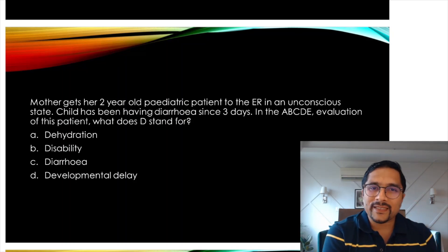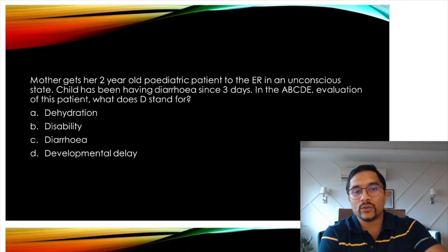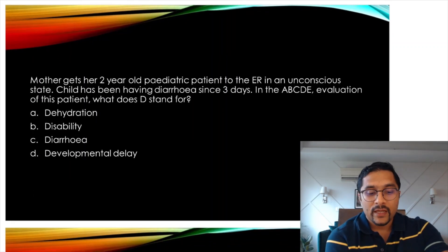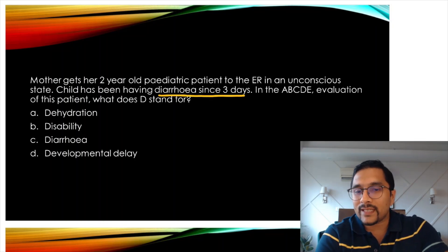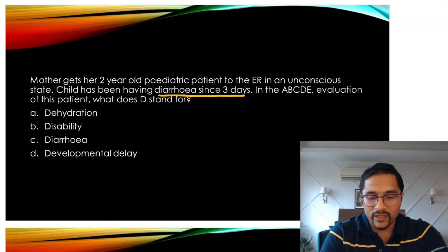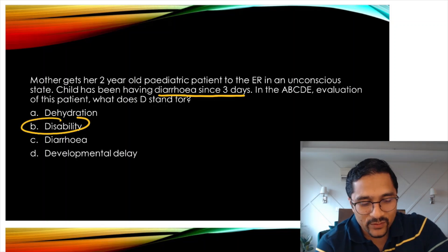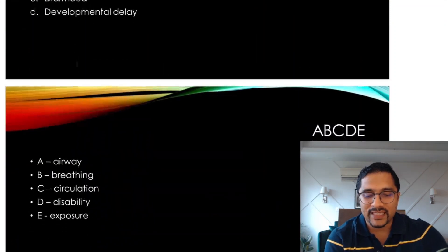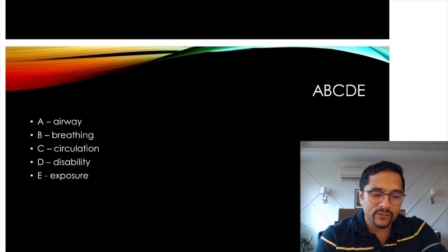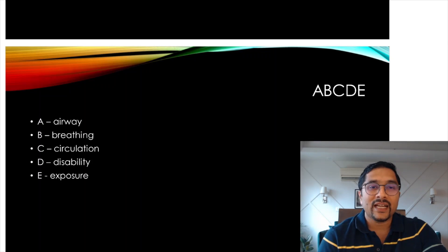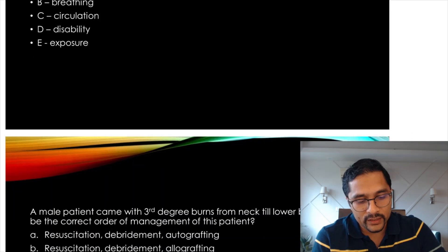A common sense question: a mother brings a two-year-old child to the emergency room in an unconscious state with diarrhea since three days. In the A, B, C, D, E evaluation, what does D stand for? D stands for disability — not diarrhea. A is airway, B is breathing, C is circulation, D is disability, and E is exposure.